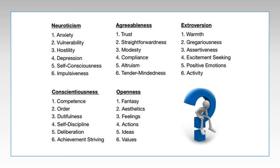The next trait is neuroticism. People who are high in neuroticism tend to be more self-conscious, more likely to be impulsive, and more likely to worry and get easily upset. There's a lot of emotionality tied to this. Like all these traits, neuroticism falls on a spectrum — some may be very high, others in the middle, and others low in neuroticism.